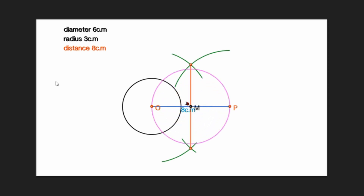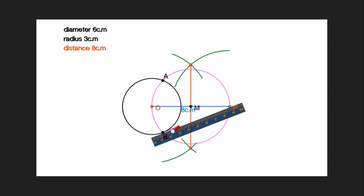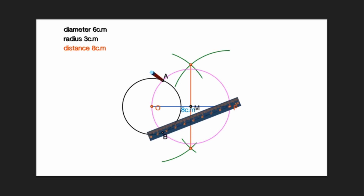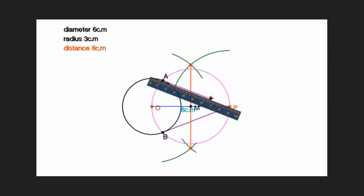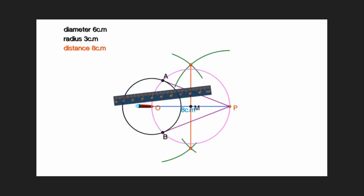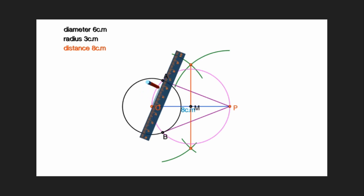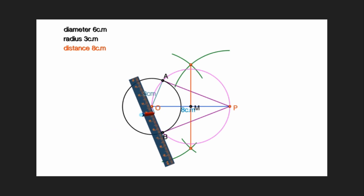That point is P. The two arcs intersect and the points are A and B. The point is P and the center is O.